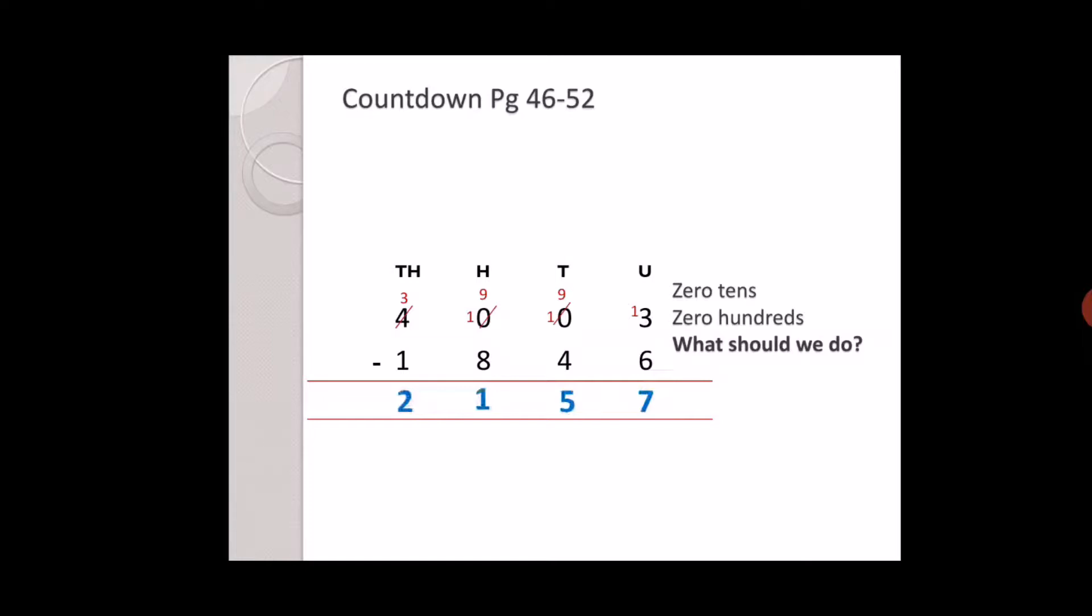Three was in ones place, three minus six cannot be done. Tens was also zero, hundreds was also zero. And in thousands place was four. So what did we do? We borrowed from thousands to hundreds, and from hundreds to tens. Nine minus eight is one, and in thousands place three minus one is two. So the answer is two thousand one hundred fifty seven.